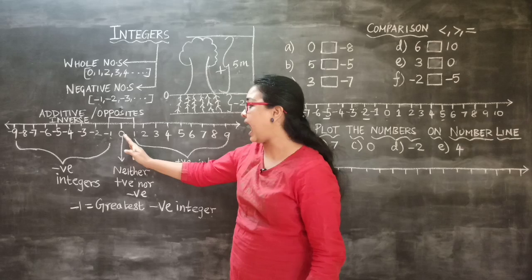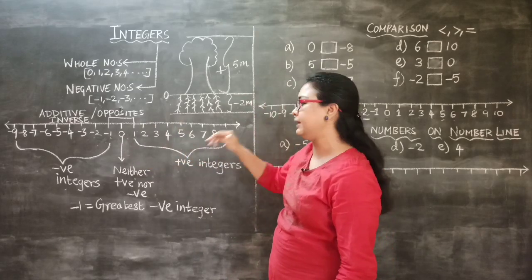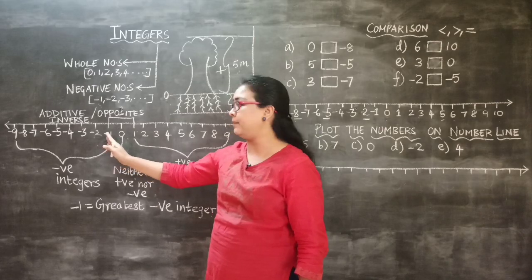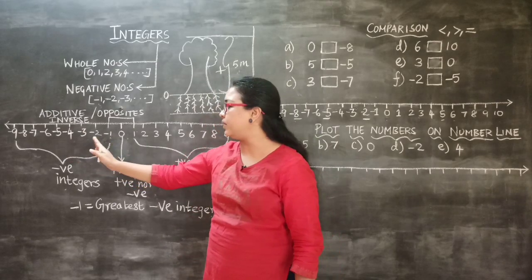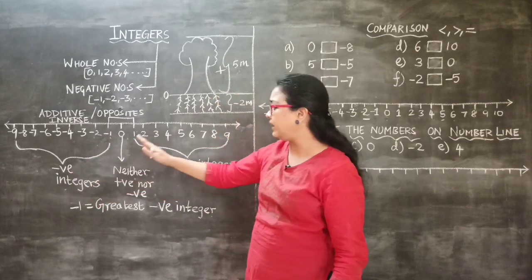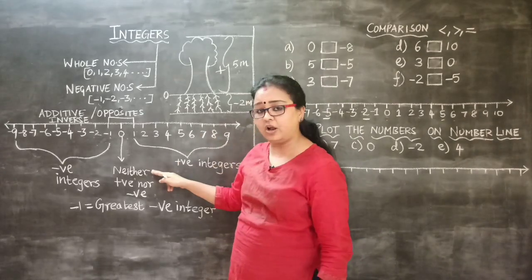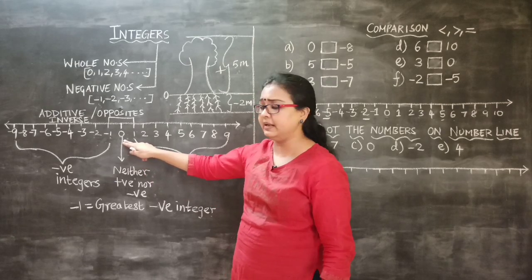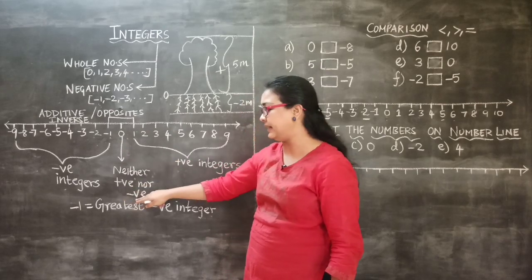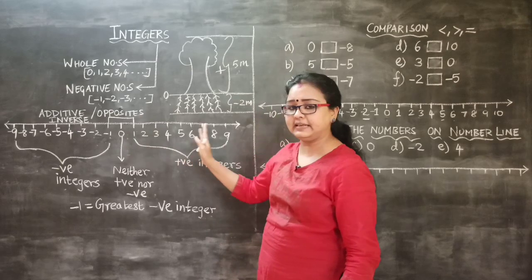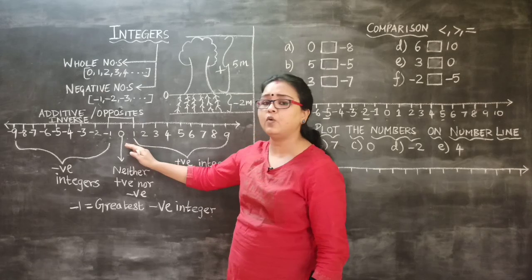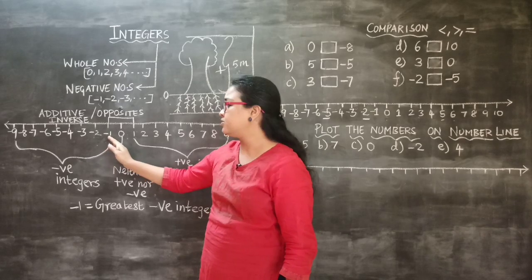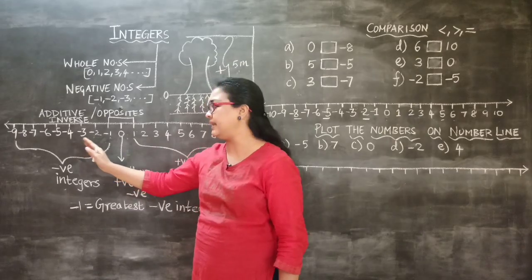Positive integers are placed after 0 towards the right hand side. Similarly, from the left side it starts with minus 1, minus 2, minus 3, minus 4 and keeps going — these are the negative integers. On this number line, 0 is neither positive nor negative and is written without any sign. Towards the right are positive integers starting from 1, and towards the left are negative integers starting from minus 1.